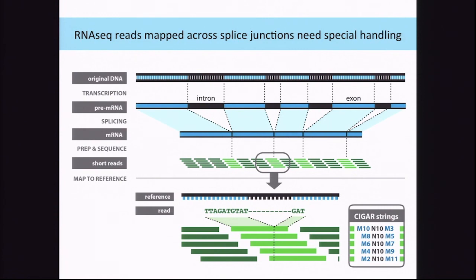We see that this part of the read is coming from one region, and this part from another region. The way to represent it in the CIGAR string is to have N's in the middle. So in this case, there are 10 matches, then 3 matches, and in the middle there is a gap of N bases represented as N10. The GATK was not designed to deal with these N's because in DNA data we don't have N's in the CIGAR string. Some tools will fail and give an error. Some tools will be able to work with the N but are not guaranteed to give the correct answer. So to be able to run other GATK tools, we needed to get rid of these N's, and this is why we have the new tool.